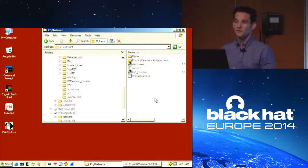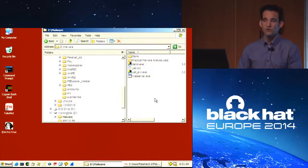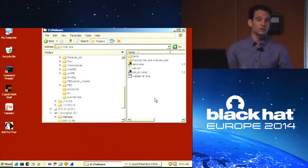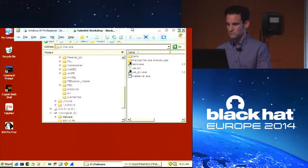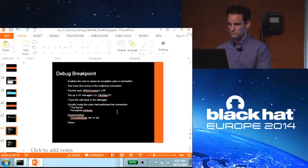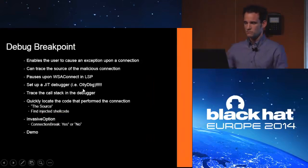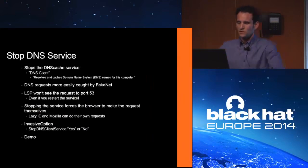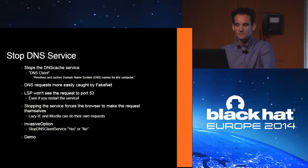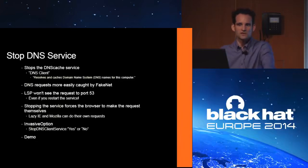So there are a couple of different options for how we can get back to our code once that breakpoint is hit. We can do a stack trace, or break on access in the shellcode. Another new feature is stop DNS client service. This stops the DNS cache service in Windows, also known as DNS client. In Windows, your browser doesn't actually do the DNS request directly — it talks to a service in Windows, and that service is what does the connection on port 53 on your behalf. Not a lot of people know that. So for FakeNet, if you want to log the proper process name for who's actually responsible for the DNS request, you're going to have to turn off that service.